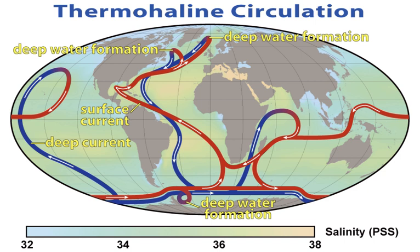In tropical regions, corals are likely to be severely affected as they become less able to build their calcium carbonate skeletons, in turn adversely impacting other reef dwellers. The current rate of ocean chemistry change seems to be unprecedented in Earth's geological history, making it unclear how well marine ecosystems will adapt to the shifting conditions of the near future. Of particular concern is the manner in which the combination of acidification with the expected additional stressors of higher temperatures and lower oxygen levels will impact the seas.